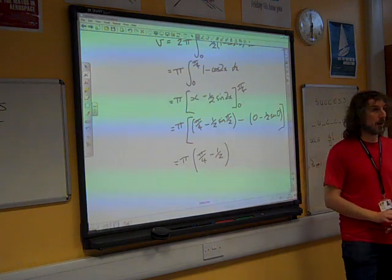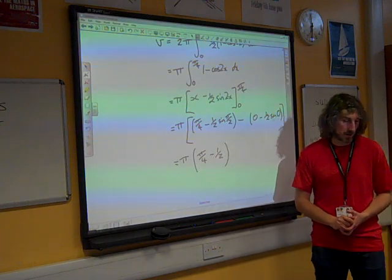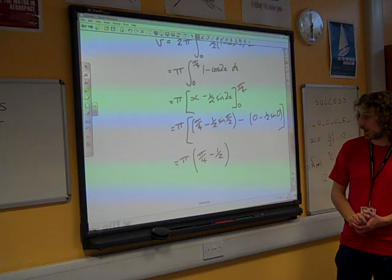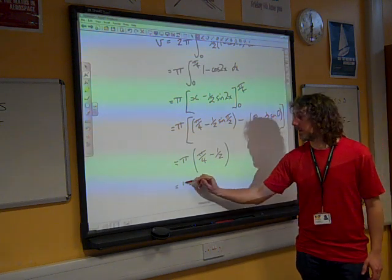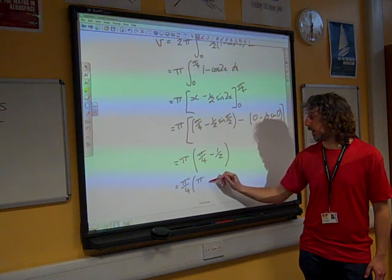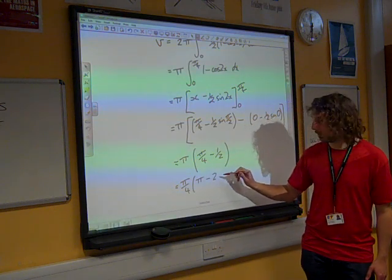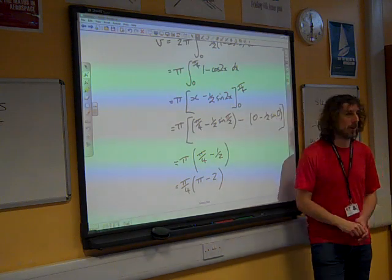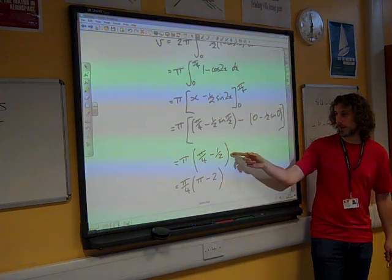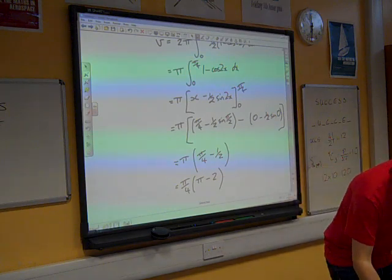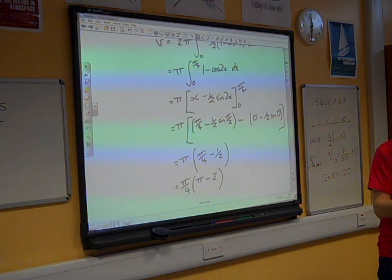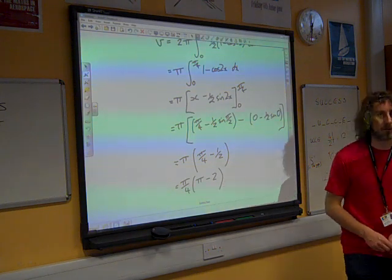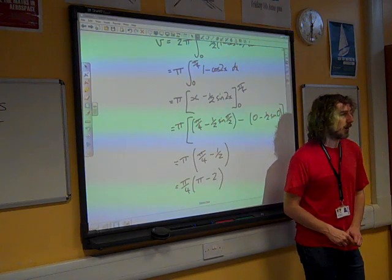So we're just left with pi times pi by 4 minus 1 half. We might leave it like that. We might take the quarter out and leave it as being that. That's probably enough as an answer. The mark scheme said pi, that quarter pi squared minus 1 half of pi. But they would have accepted a factorised version.